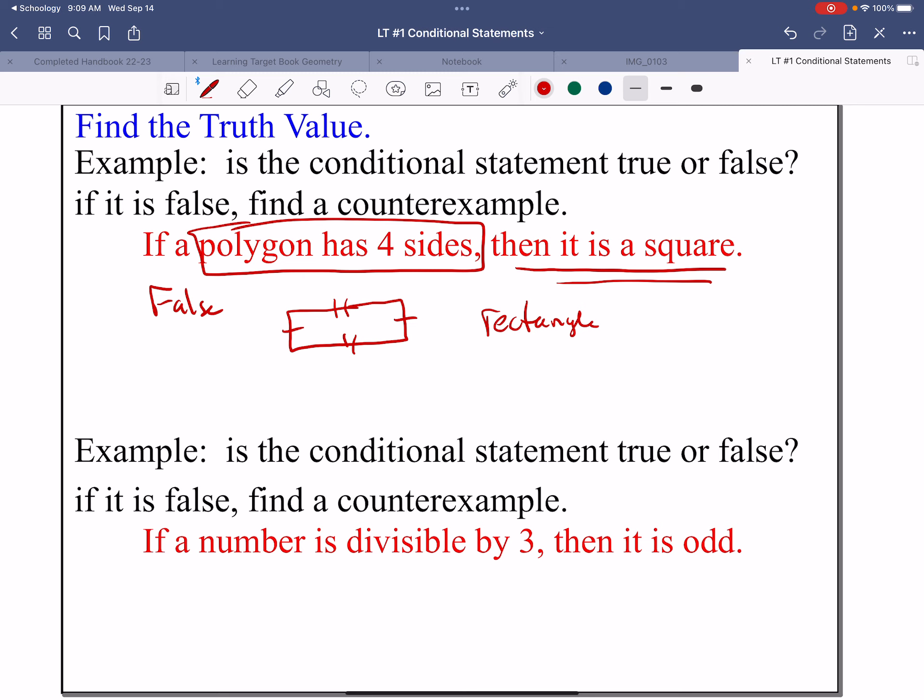Next one. If a number is divisible by three, then it is odd. All you need is one counterexample. So this part has to be true, a number divisible by three, such as 12. Is 12 an odd number? No. So this is false because I found a number that is divisible by three, 12, but it's not odd. It's in fact even.